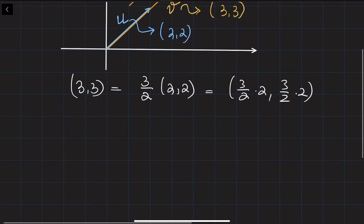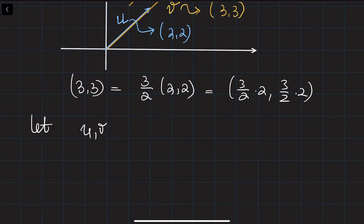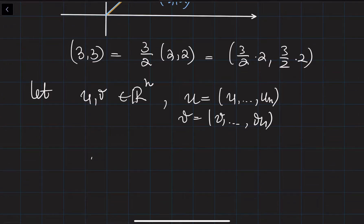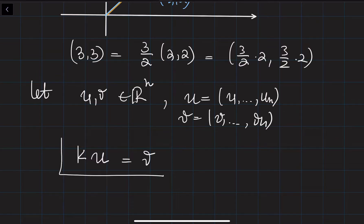This works for any vector. In general, if you are given u and v in n-dimensional space, u is given with n components and v is given with n components v1 through vn, then u times some constant k equal to v implies these two vectors are parallel. Or, if the two vectors are parallel, then this condition holds.